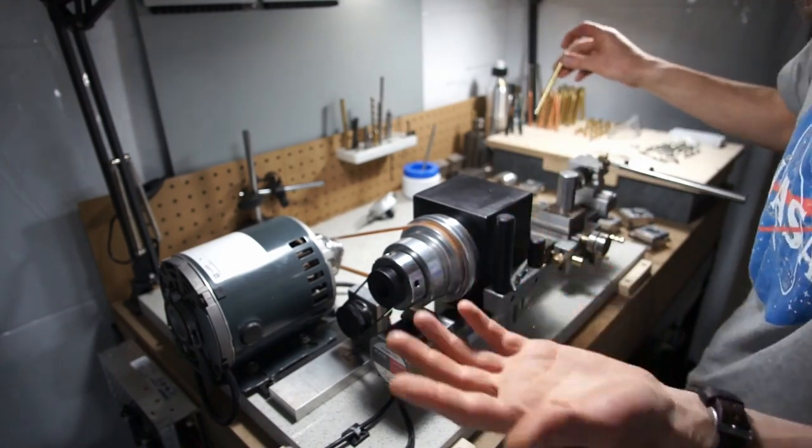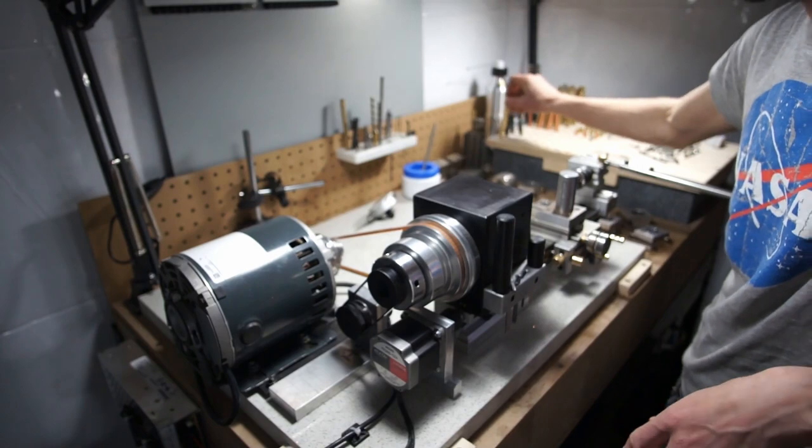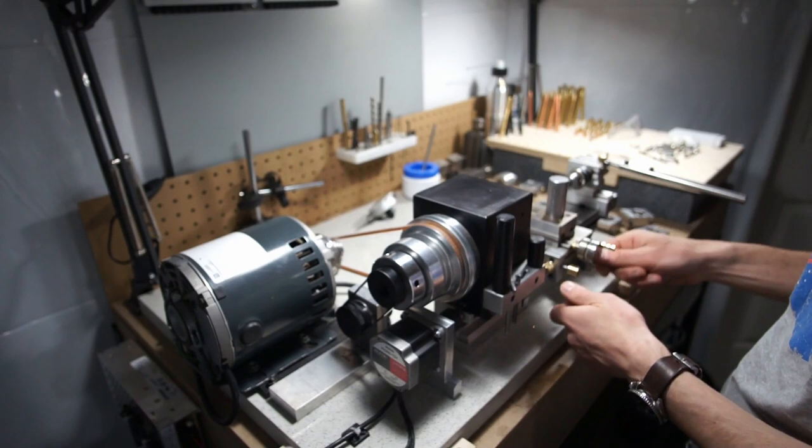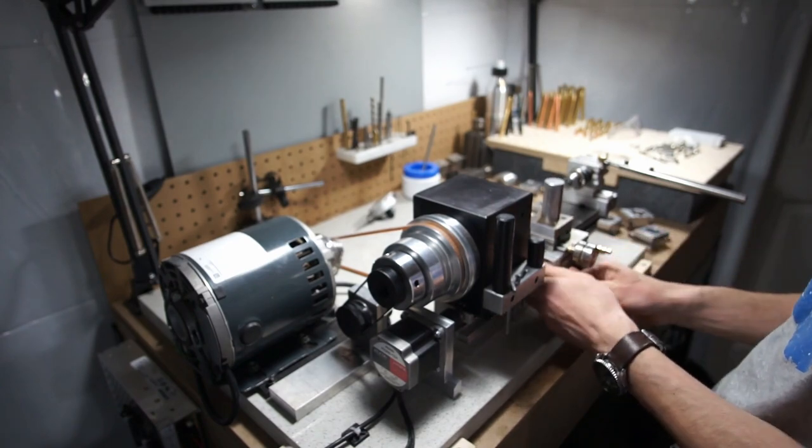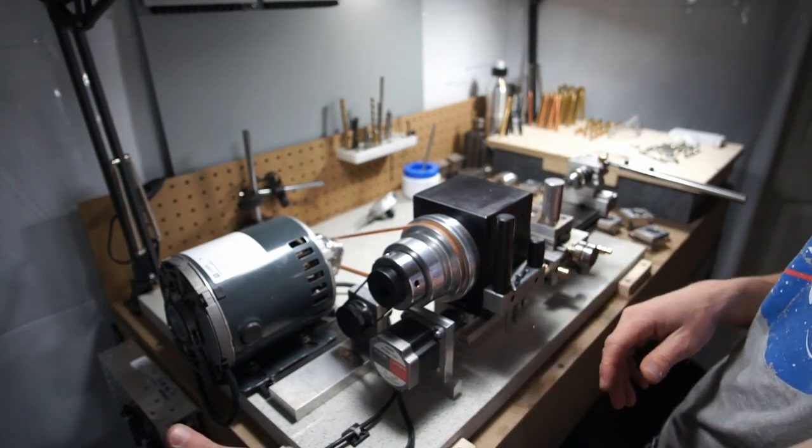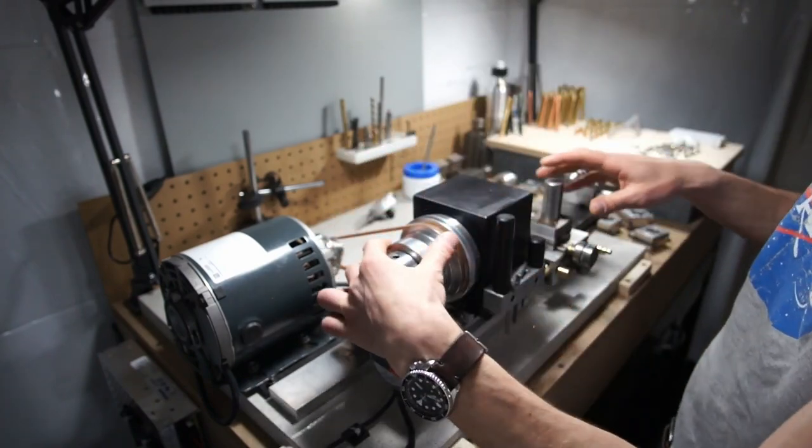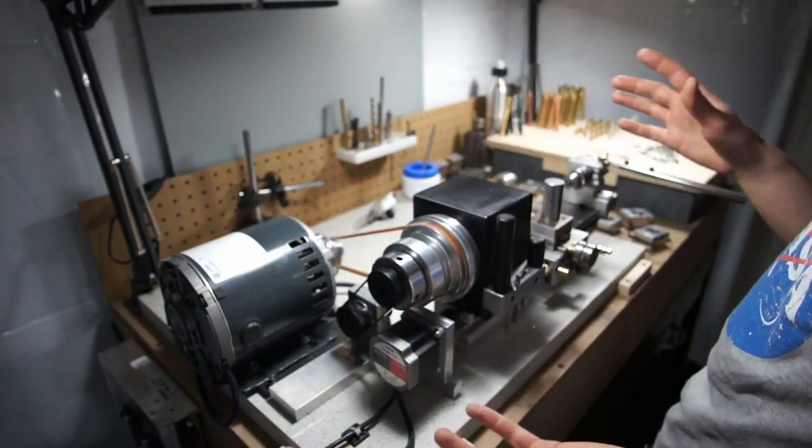And technically I could write a program so it would do it, it's like a half CNC lathe half manual lathe but like I said its main purpose is threading. So I bring it basically up to my work, lock into position, set whatever kind of threads I want, hit the go button and then these are locked so then once this spins this moves and I will put some video so you don't have to listen to me talk about it.